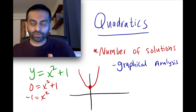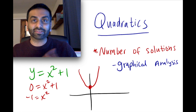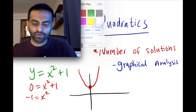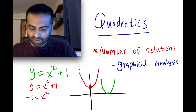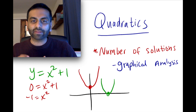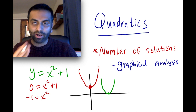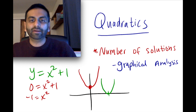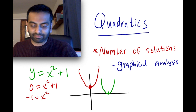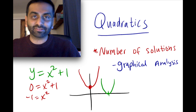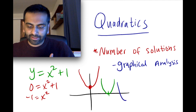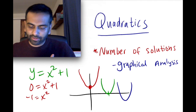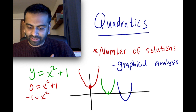That's the case when you have no solutions. You might also have cases where you have exactly one solution — if your parabola's vertex itself is on the x-axis, the parabola is only touching the x-axis once, so there's only one x-intercept. And then the standard case you're used to is where the parabola intersects the x-axis twice, meaning there are two solutions.